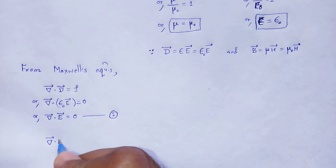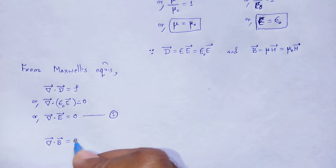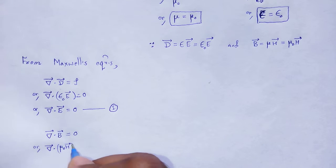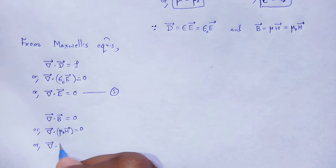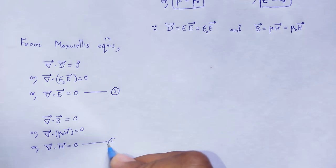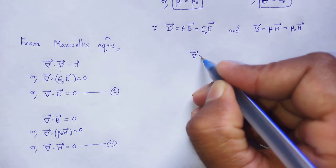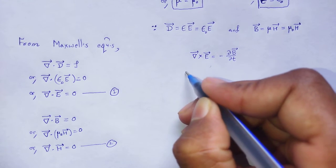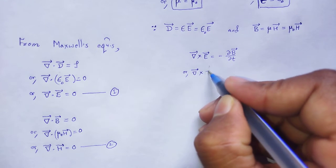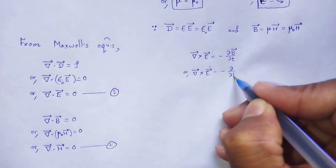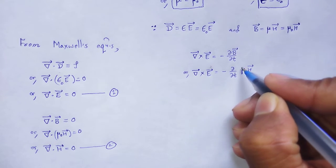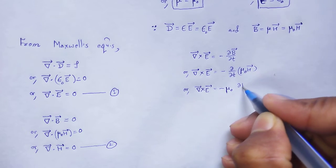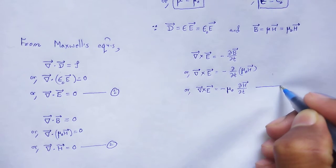Second Maxwell's equation: grad dot B equals zero; substituting mu_0 H vector, we get grad dot H vector equals zero. Third Maxwell's equation: curl of E vector equals minus del B by del t, which gives curl of E vector equals minus mu_0 del H by del t — equation number 3.